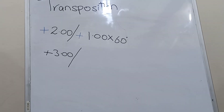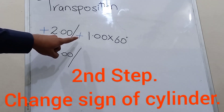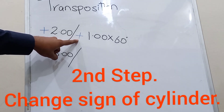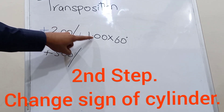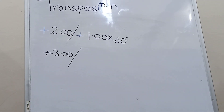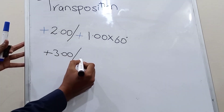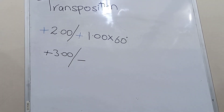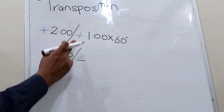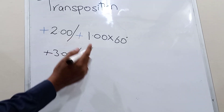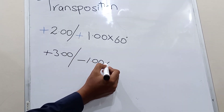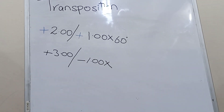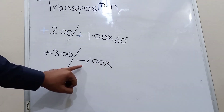The second step is to change the sign of the cylindrical correction. We have a plus sign with the cylinder, so our new cylinder will be in minus. The value remains the same; only the sign changes. That completes our second step.